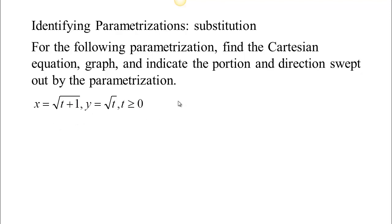In this first one, if we start with our first equation, X is the square root of T plus 1, that means X squared is T plus 1. So T is equal to X squared minus 1. Now that we know that, we can substitute into the equation we haven't used yet to find that Y is the square root of X squared minus 1.